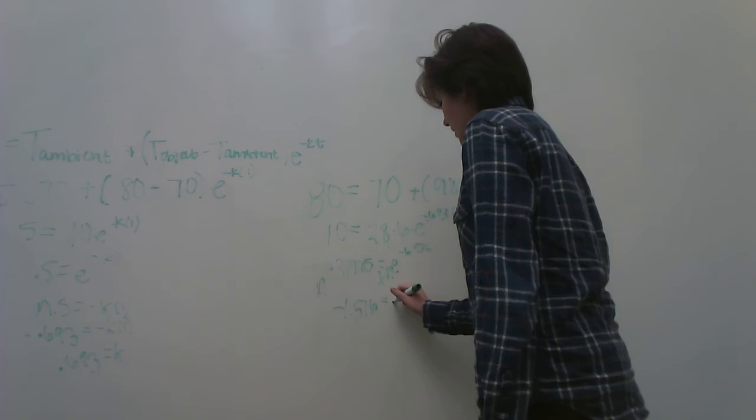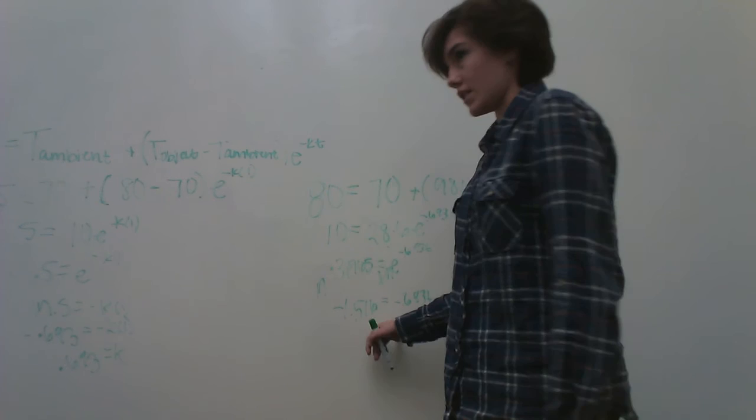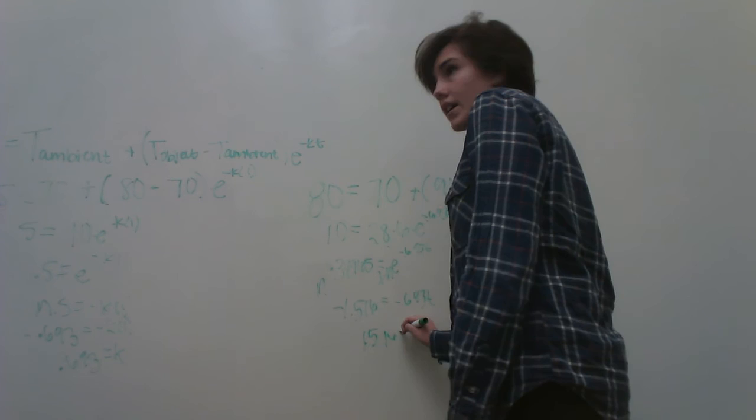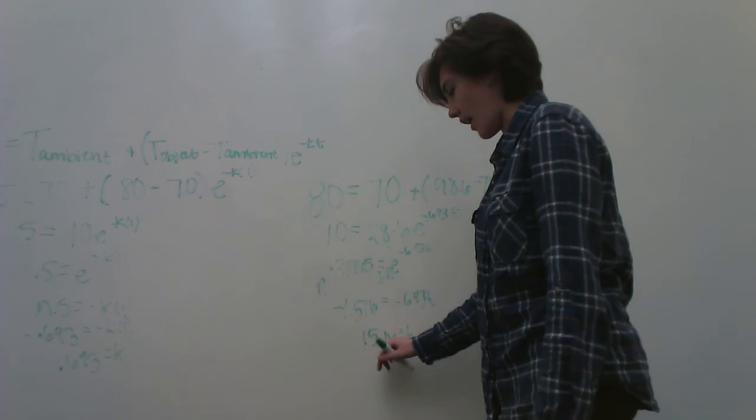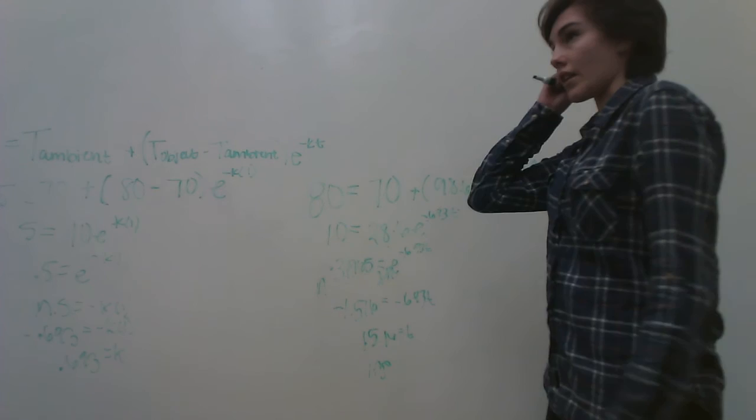That equals negative 0.693 times T. You're going to divide out the 0.693, and when you do that you get 1.516 equals T. And this is going to be an hour, so it's going to be like an hour and 30 minutes.